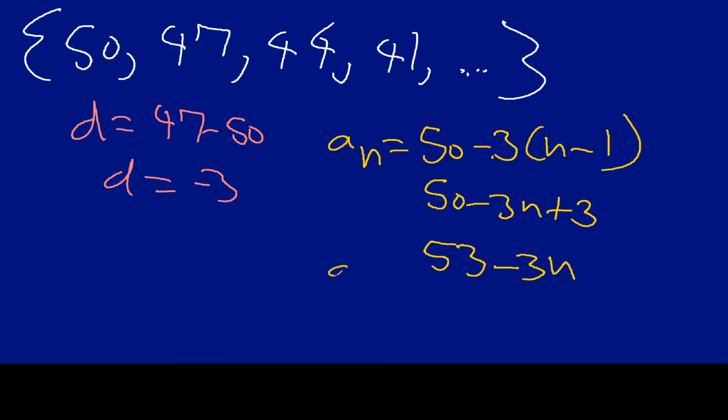I will get 53 minus 3n like so. And so, let me, so a sub n, let me just put that in front of it. So, 53 minus 3n.